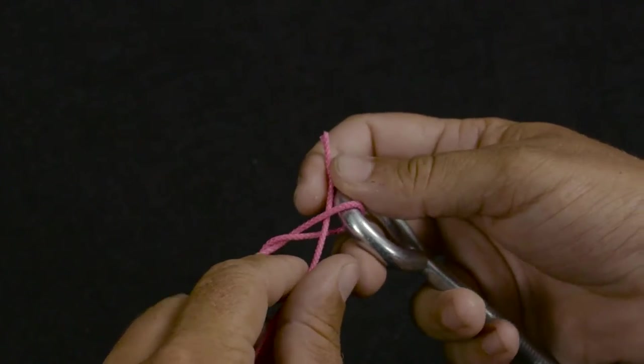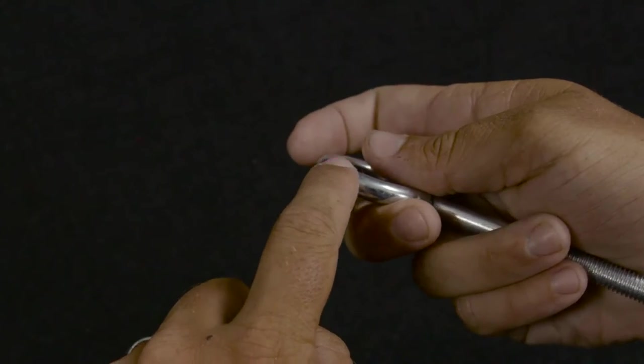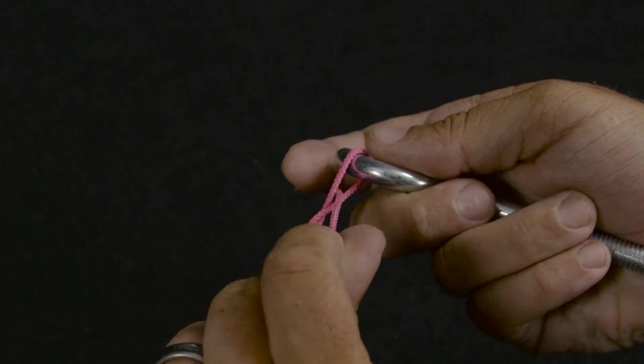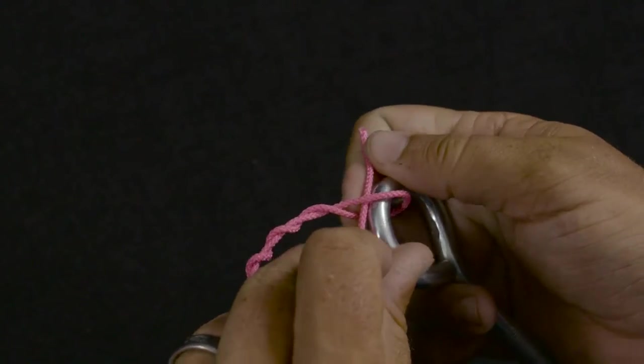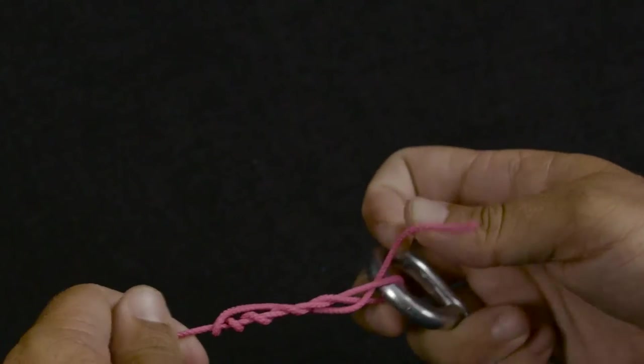Then all you do is pass it back down through where the twists stop right before it meets the eye, right through there, and just cinch that down.